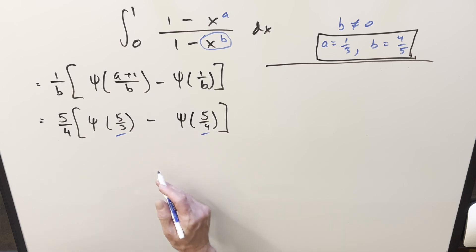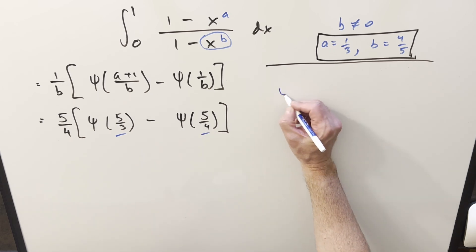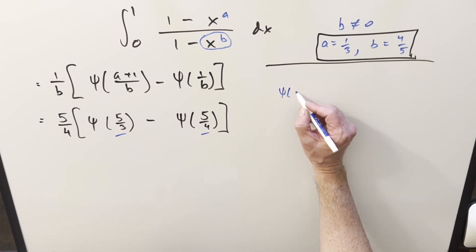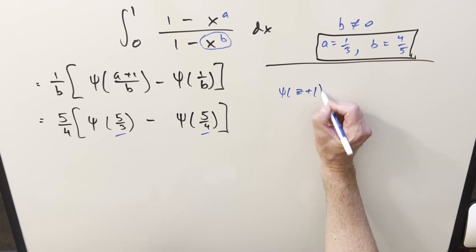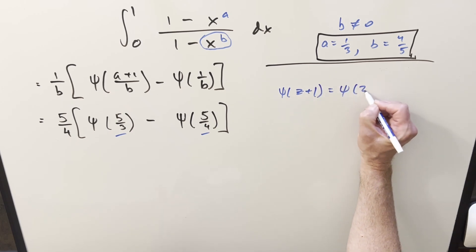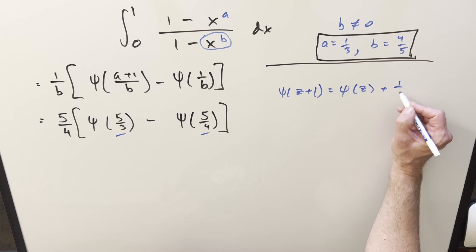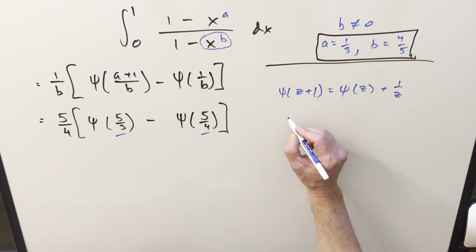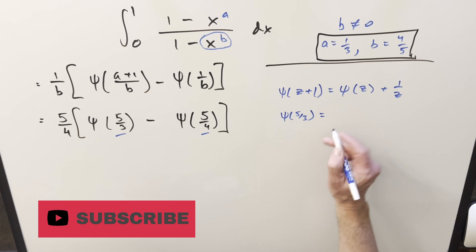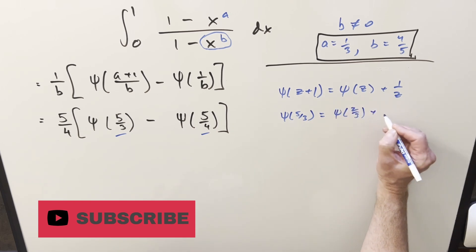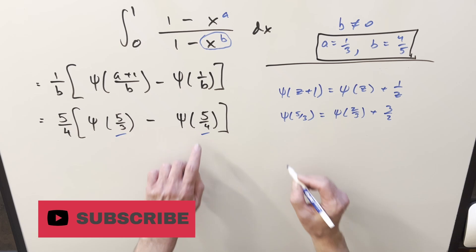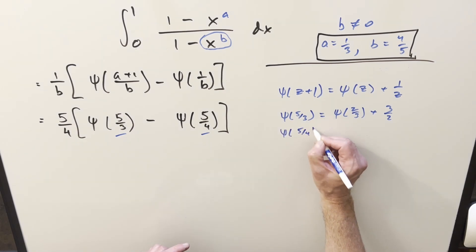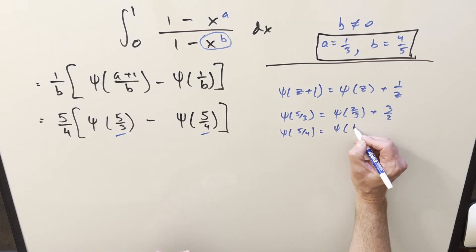Now for each of these values here, I just noticed that these are both greater than 1, which is going to allow me to use this reduction formula that if we have digamma of z plus 1, we can reduce this to digamma of z plus 1/z. So how it'll work first for digamma of 5/3, we can just reduce this by 1. So this becomes digamma of 2/3 plus 3/2. And then for this one, same kind of thing, same idea. Reduce it by 1, we get digamma of 1/4 plus 4.